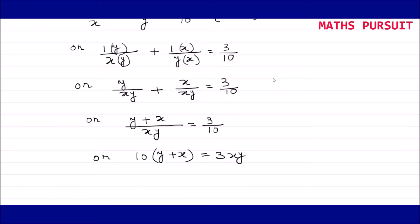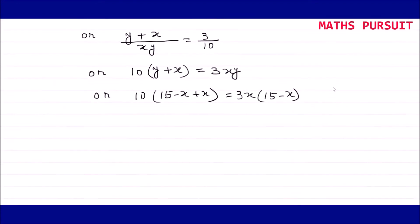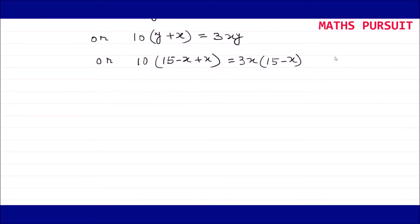I did cross multiplication — the xy moved to the right side and the 10 moved to the left side. Now let us replace the value of y from equation 1. The value of y from equation 1 was y equals 15 minus x. So instead of y I write: 10 into x plus 15 minus x equals 3x into 15 minus x. Expanding the right side: 3x into 15 is 45x minus 3x squared.